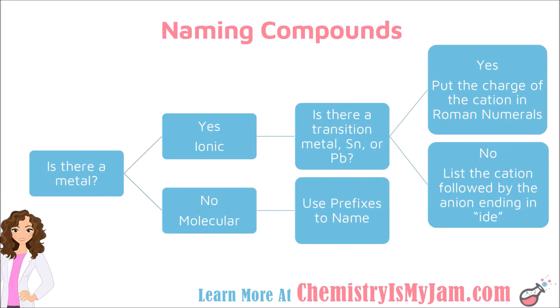This is the flow chart introduced earlier in this series for how to name compounds. The first thing you want to ask yourself is: is there a metal present? For the case of covalently bonded compounds, the answer is usually no. Typically there is not a metal present for molecular compounds — they are made up of two nonmetals. So when you go to name those, you want to use prefixes in order to name your molecular compounds.